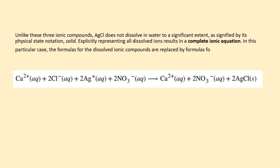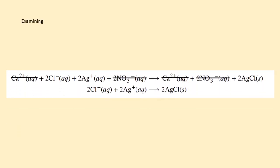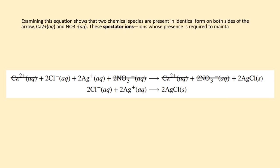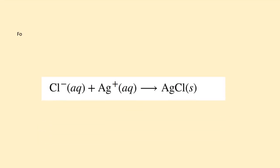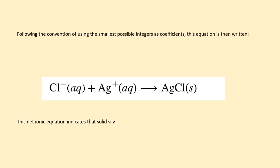In this particular case, the formulas for the dissolved ionic compounds are replaced by formulas for their dissociated ions. Examining this equation shows that two chemical species are present in identical form on both sides of the arrow: Ca2+(aq) and NO3-(aq). These spectator ions, ions whose presence is required to maintain charge neutrality, are neither chemically nor physically changed by the process, and so they may be eliminated from the equation to yield a more succinct representation called a net ionic equation. Following the convention of using the smallest possible integers as coefficients, this equation is then written. This net ionic equation indicates that solid silver chloride may be produced from dissolved chloride and silver ions, regardless of the source of these ions.